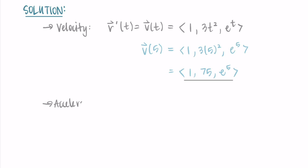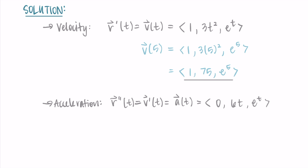We repeat this process for the acceleration. The acceleration is the second derivative of position, or the first derivative of velocity, and I'll use a(t) to represent it. Taking the derivative of the velocity vector: the derivative of 1 is 0, the derivative of 3t² is 6t, and the derivative of eᵗ is eᵗ. To find the acceleration at t = 5, I substitute in 5: ⟨0, 6(5), e⁵⟩.